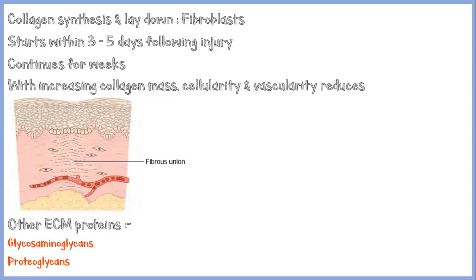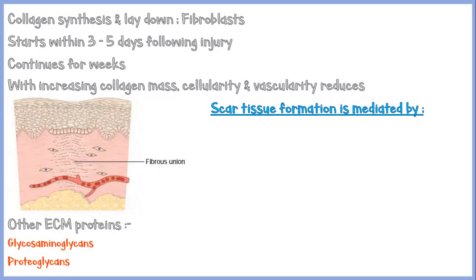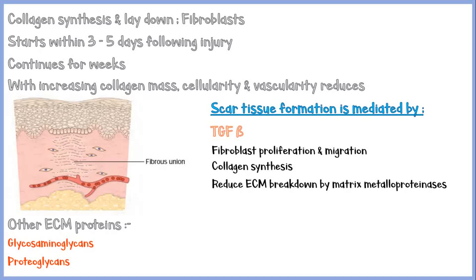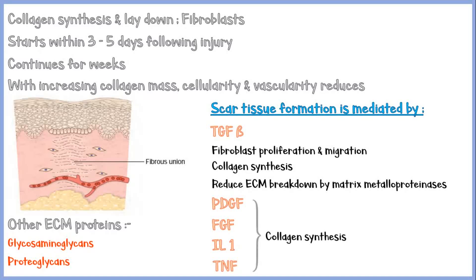Scar tissue formation is mediated by several cytokines secreted by macrophages, platelets, and activated endothelial cells. The main one is transforming growth factor beta (TGF-beta). It induces the proliferation and migration of fibroblasts and increases collagen synthesis. It also reduces the breakdown of extracellular matrix proteins by matrix metalloproteinases. In addition to TGF-beta, platelet-derived growth factor, fibroblast growth factor, interleukin-1, and tumor necrosis factor alpha all increase the synthesis of collagen.